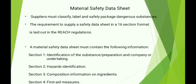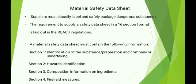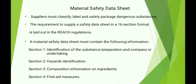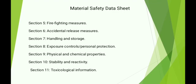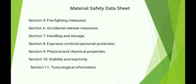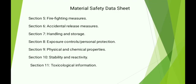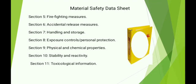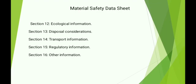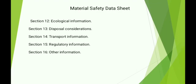A material safety data sheet must contain the following information. Section 1: Identification of the Substance/Preparation and Company or Undertaking. Section 2: Hazards Identification. Section 3: Composition/Information on Ingredients. Section 4: First Aid Measures. Section 5: Firefighting Measures. Section 6: Accidental Release Measures. Section 7: Handling and Storage. Section 8: Exposure Control/Personal Protection. Section 9: Physical and Chemical Properties. Section 10: Stability and Reactivity. Section 11: Toxicological Information. Section 12: Ecological Information.